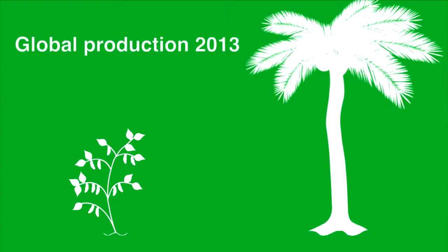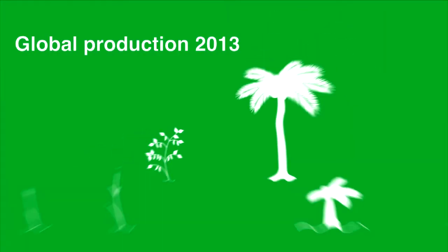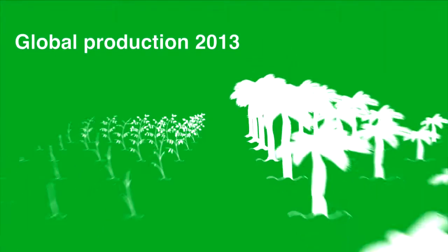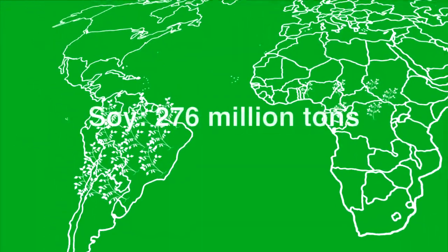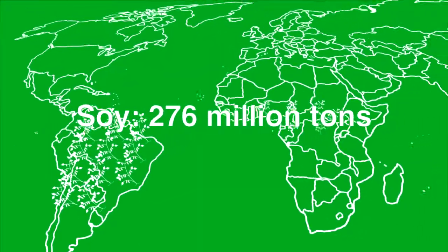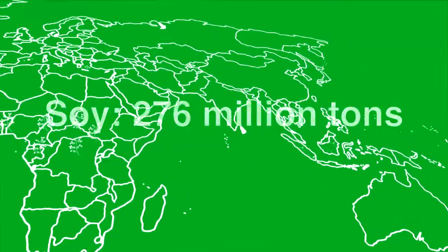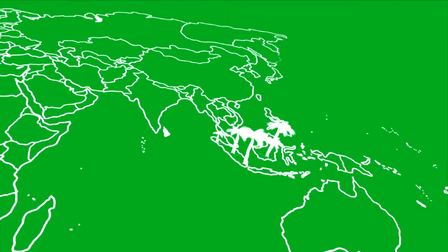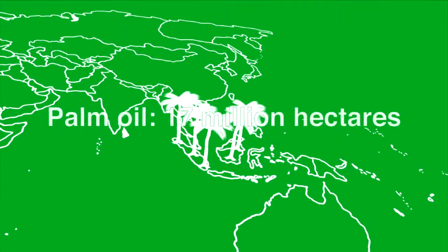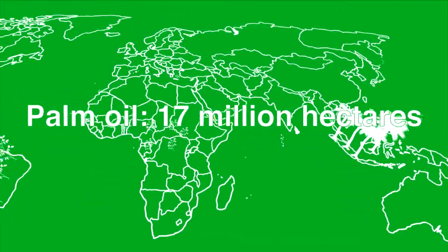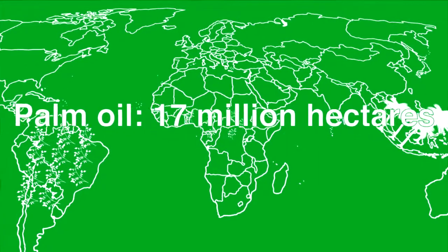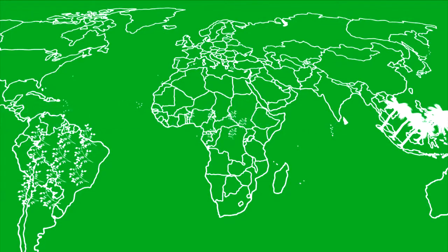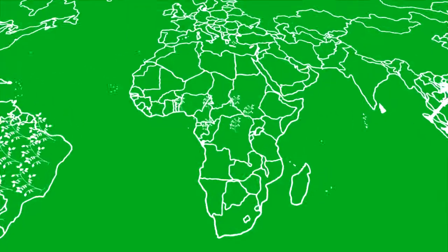Over the past decades, large-scale monocultures of soy and oil palm have seen unprecedented growth. This has given a positive impulse to the exports and economies of producing countries, but has also led to negative impacts such as deforestation, contributions to climate change, and social conflict.